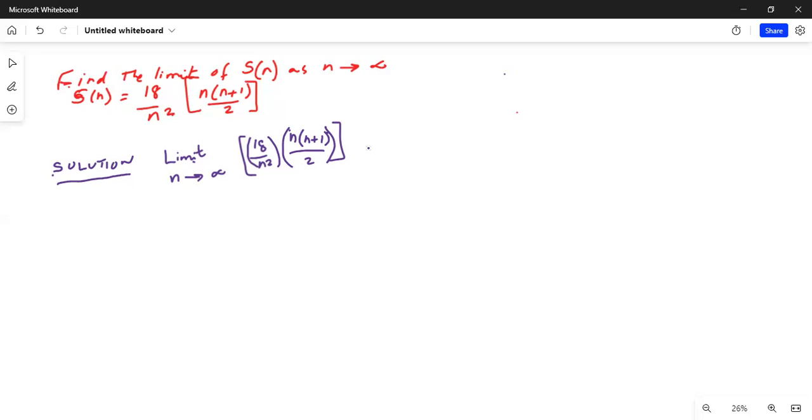So this can be written as limit—I write the short form LIM. Before that I will bring 18 over 2 outside because these are constant terms. Limit as N tends to infinity. I'm left with inside the parenthesis N times N is N squared plus N times 1 is N, divided by N square.